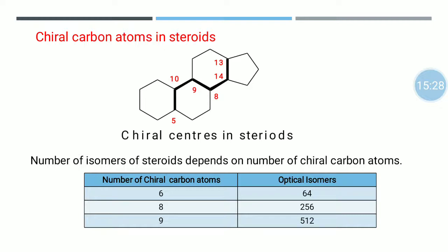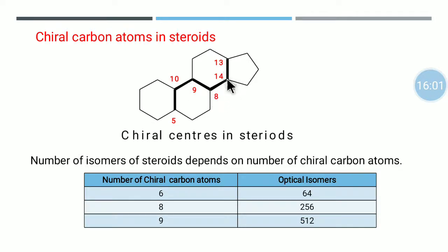Let us study the stereochemistry of steroid skeletons further. In gonane, we observe a total of 6 chiral carbon atoms, located at positions 5, 8, 9, 10, 13, and 14.